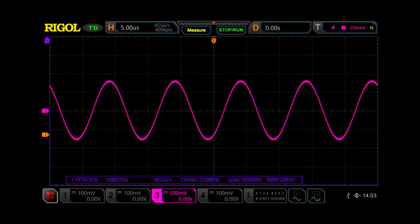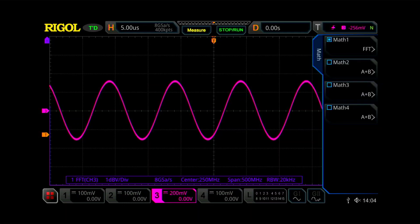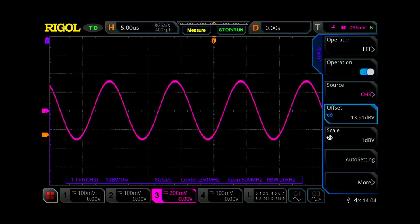So in order to use the FFT function, we have channel three showing our picture here. And we've measured that. And so now we want to do an FFT. So we're going to turn that on. We're going to go to the math section. And math, we're going to choose FFT. We're going to turn the operation on.